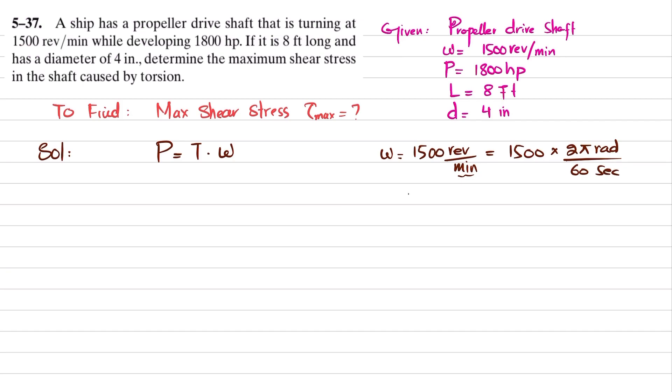When you solve this, you will get omega equals 50π radians per second. Now we will find power, which is also given as 1800 horsepower.